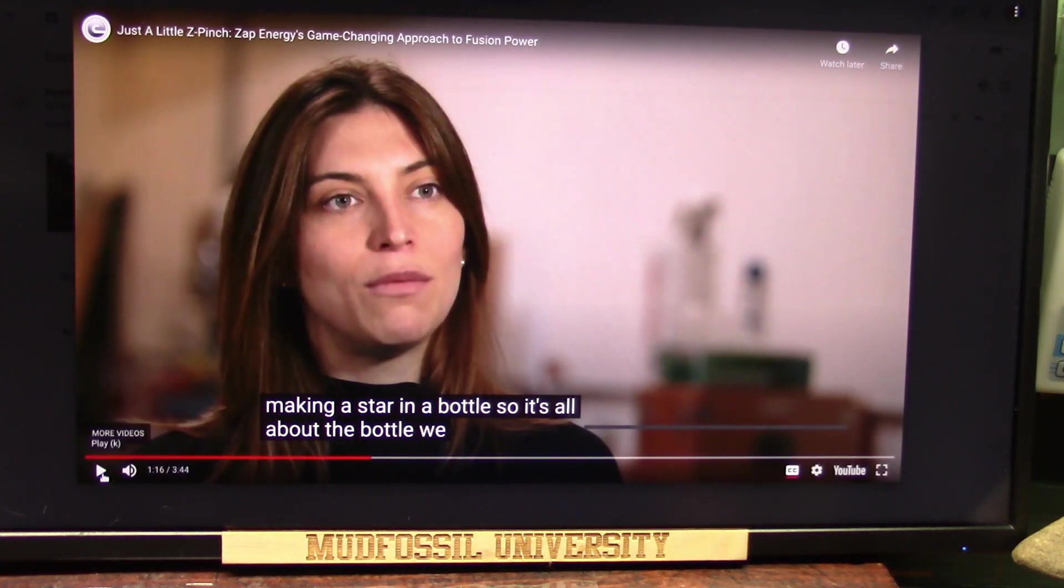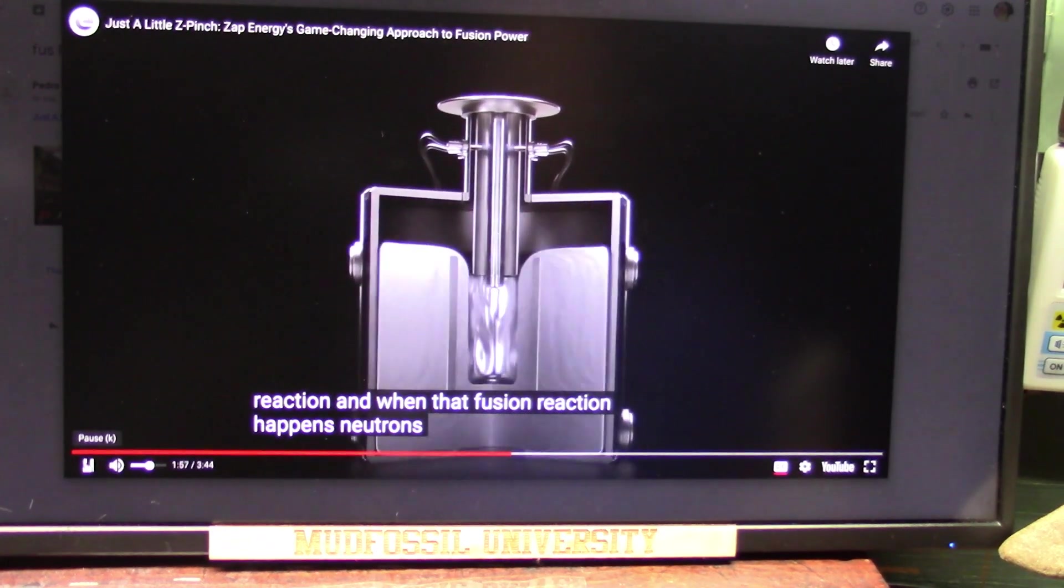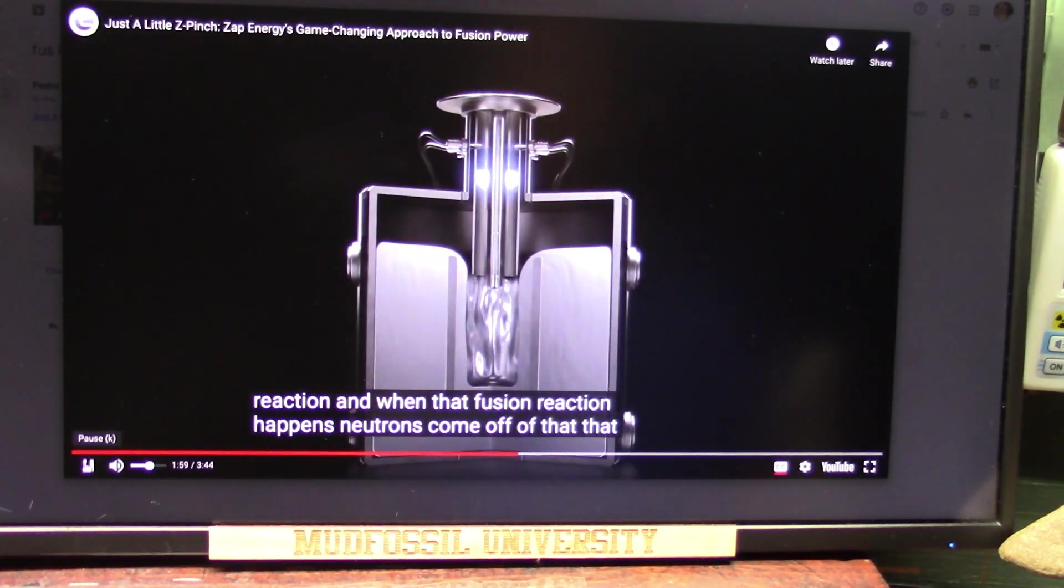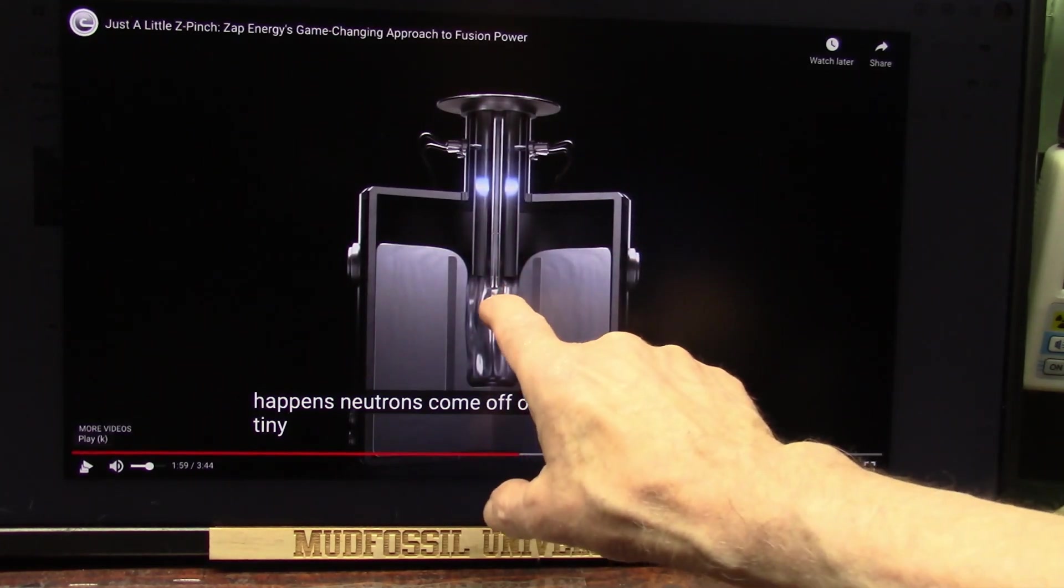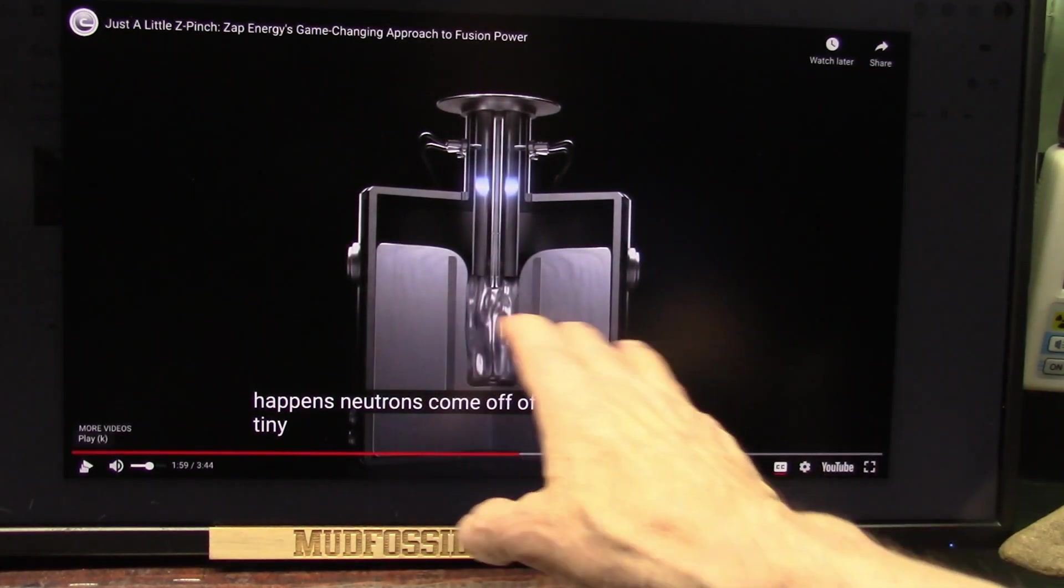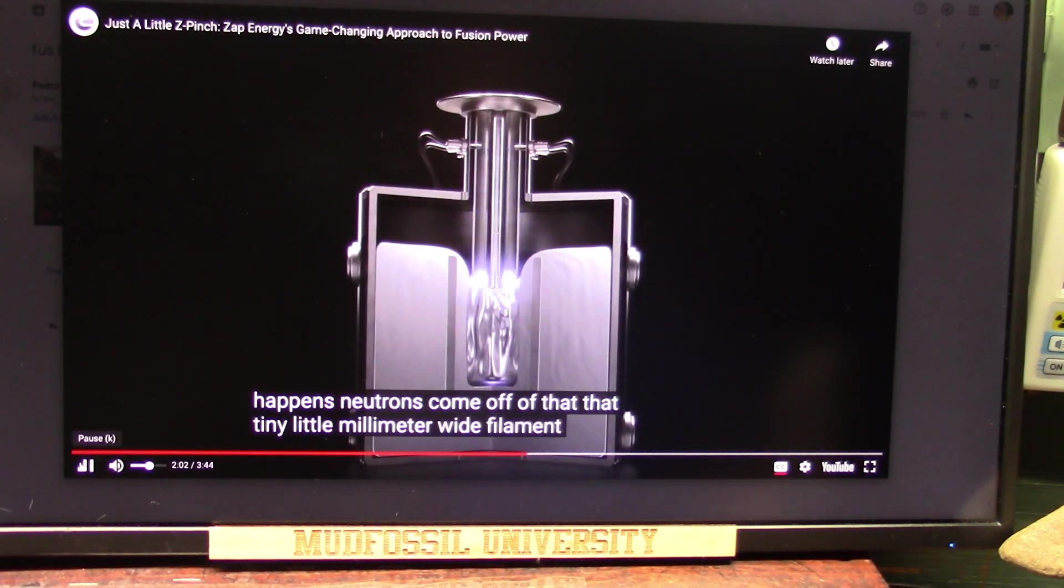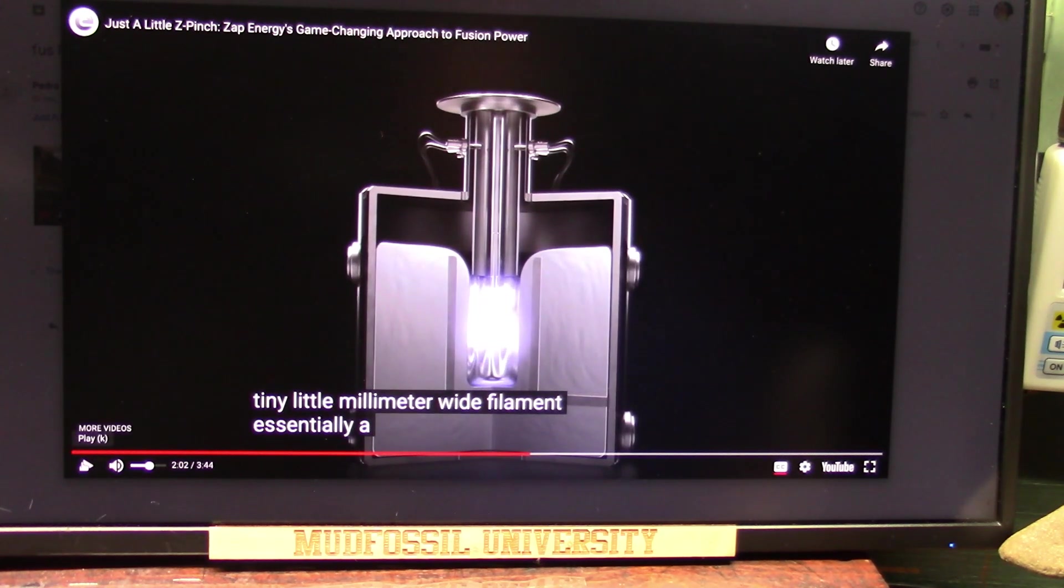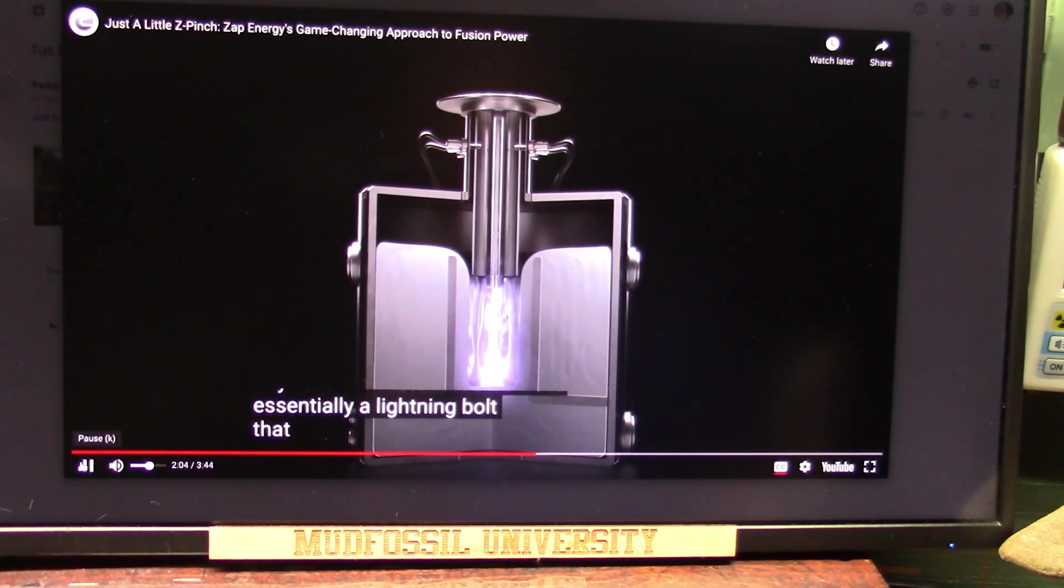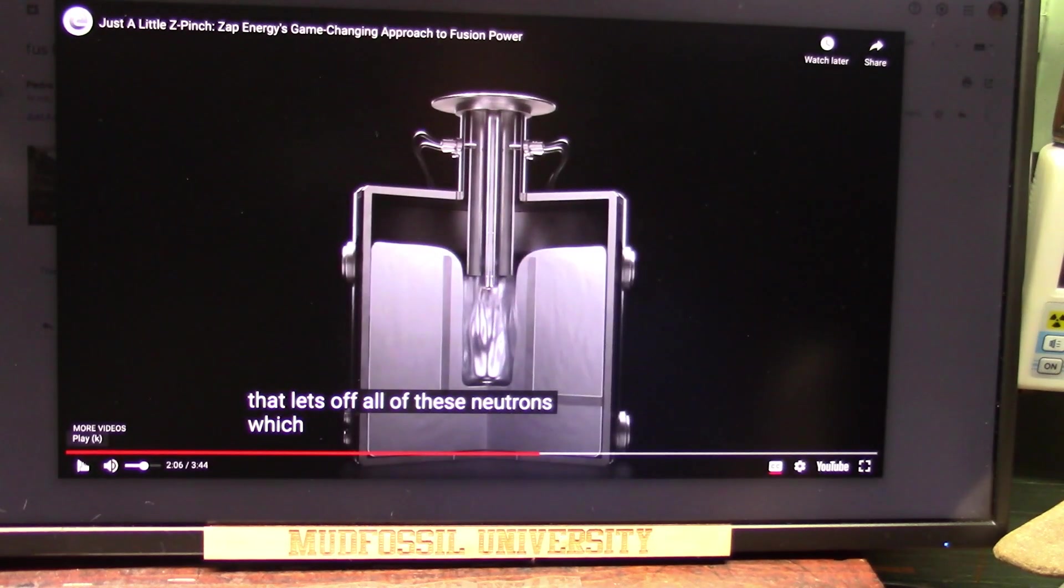Here's how they're making their fusion reaction. What happens, neutrons come off of that type. They're shooting pulse down here, and then they're going to pinch it there, and then they're going to get that heat, and they're going to push it into a liquid metal, it appears. Any little millimeter-wide filament, essentially. Millimeter-wide? That's very, very tiny. Lightning bolt. That lets off all of these neutrons. Did you see this flash?